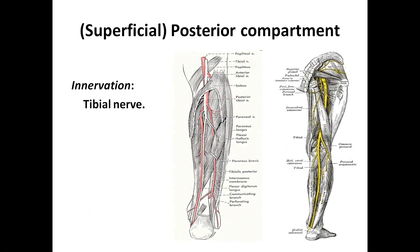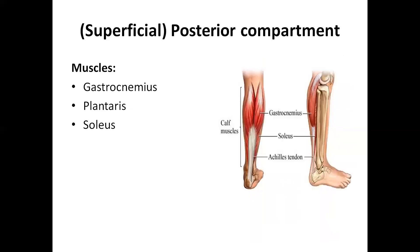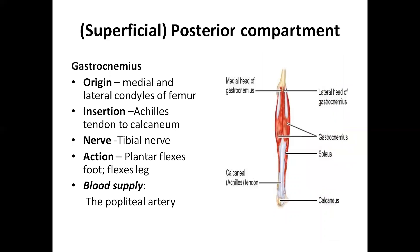There is also a deep posterior compartment. We have three muscles that are important: gastrocnemius, soleus, and plantaris. The gastrocnemius is two muscles which originate from the medial and lateral femoral condyle.